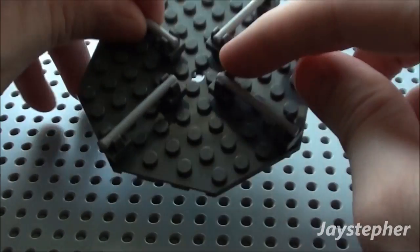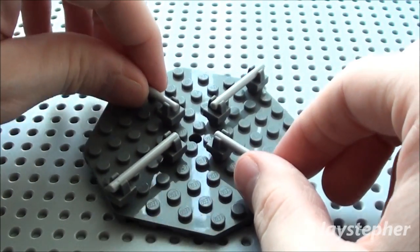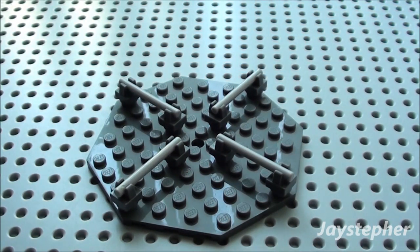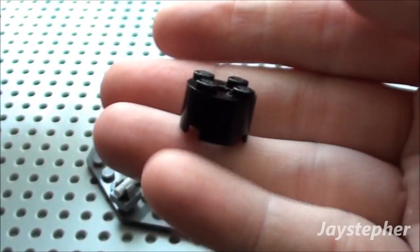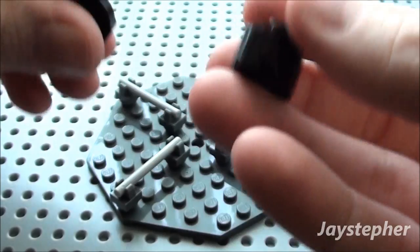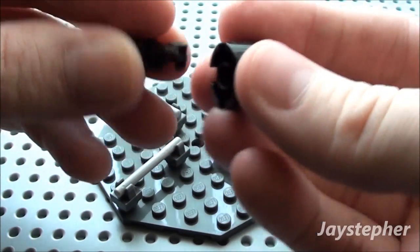Next thing we're going to do, we need to kind of decorate this middle part here, and I'm going to put like a middle handlebar. Simply take a 2 by 2 rounded block, or a brick, and a 2 by 2 rounded plate.